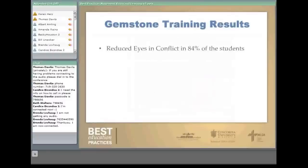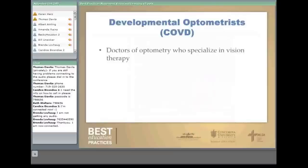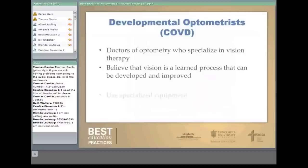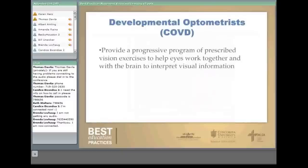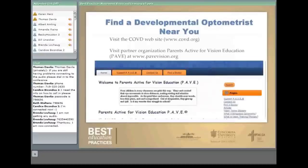Developmental optometrists are another option — they will have COVD after their license, which stands for College of Optometrists in Vision Development. They are doctors of optometry who specialize in vision therapy and believe that vision is a learned process that can be developed and improved. They use a progressive program of prescribed vision exercises to help the eyes work together with the brain to interpret visual information, with weekly office visits and daily home exercises. To find one near you, go to COVD.org or their partner organization, Parents Active for Vision Education.